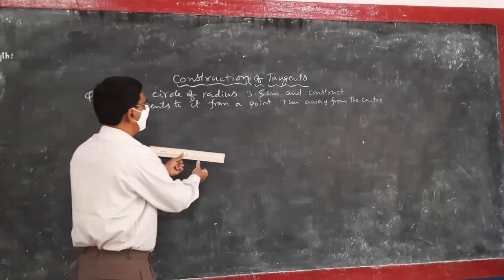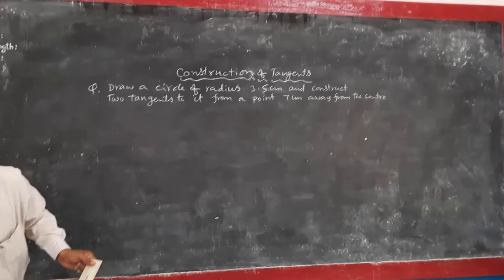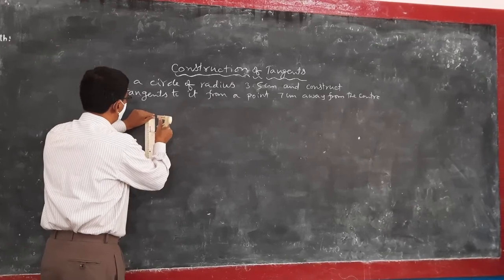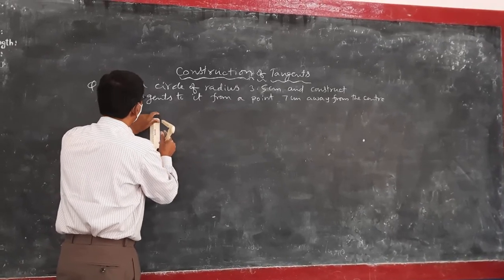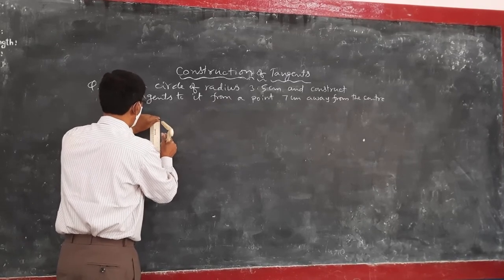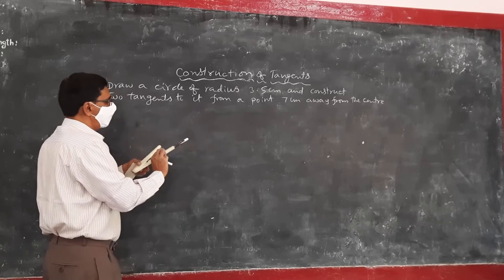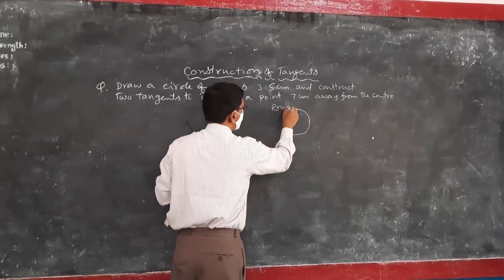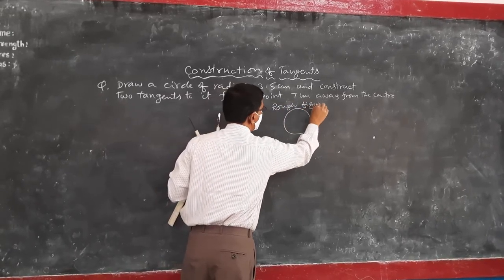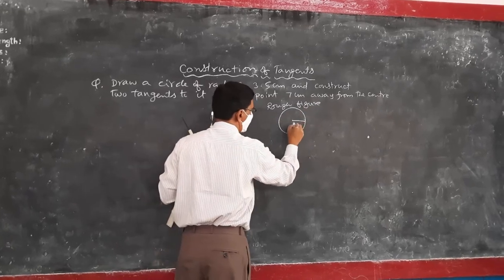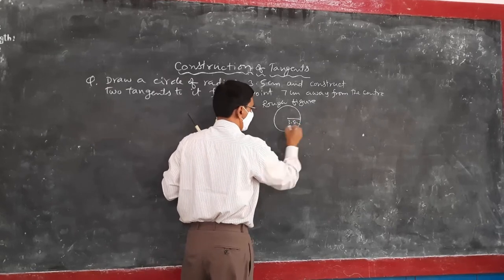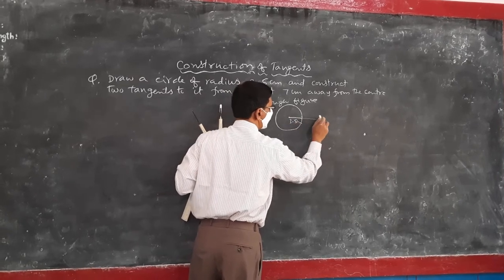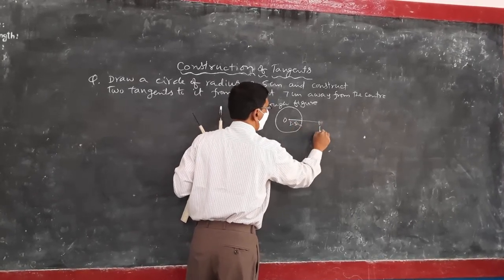Now let us draw. Take the measurement 3.5 cm. Firstly we draw a circle. This is 3.5 cm radius. And anywhere you draw, take a point which is 7 cm from this. This is O. P is 7 cm.